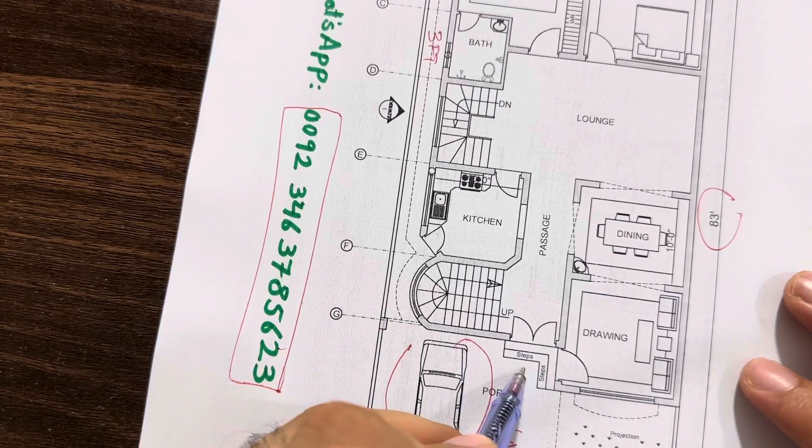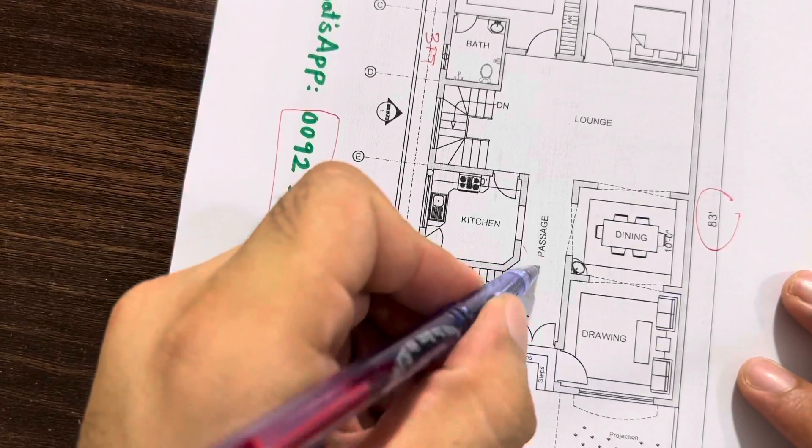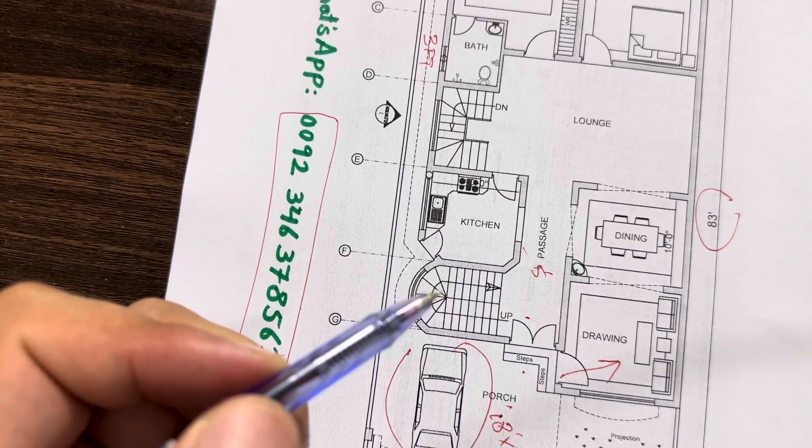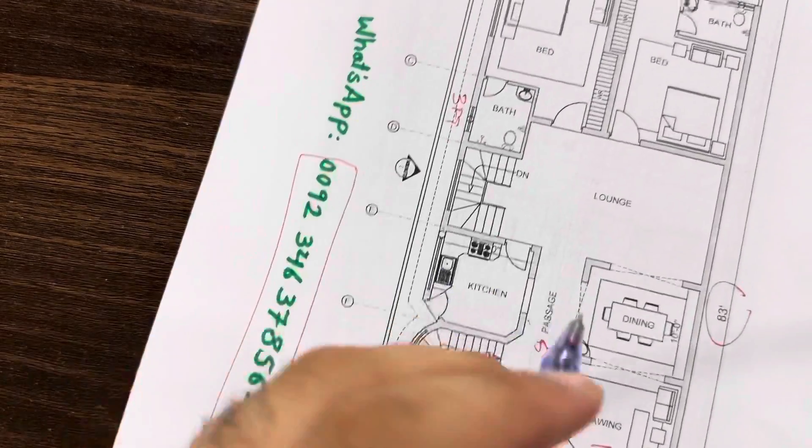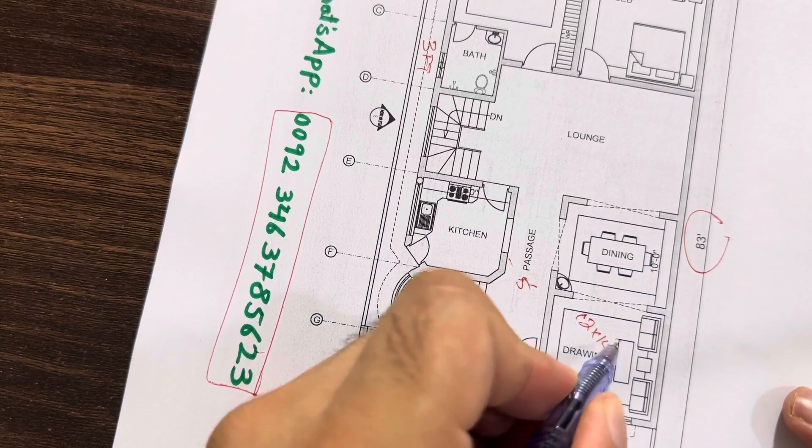Next, you can see these are steps, especially for this passage, which is 5 feet. See, this is a drawing room. The size of this drawing room is 12 feet by 14 feet.